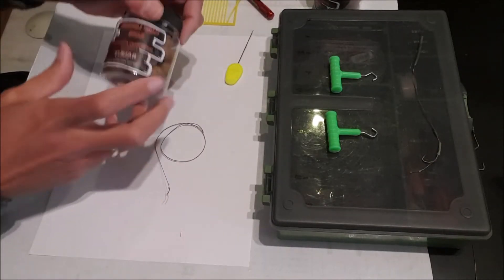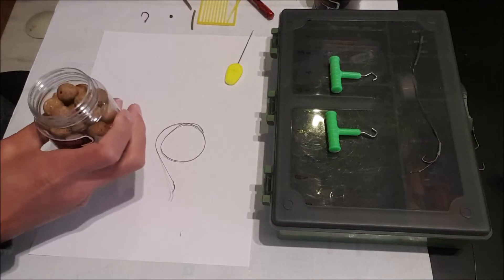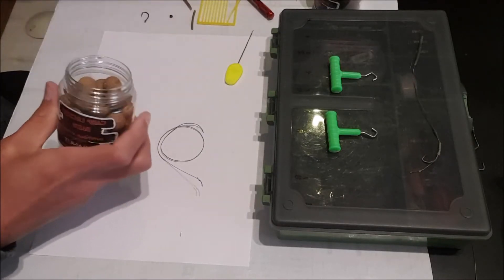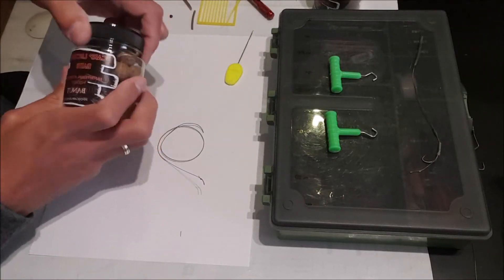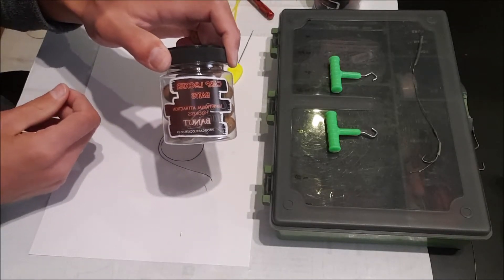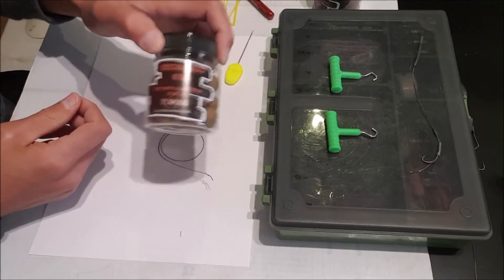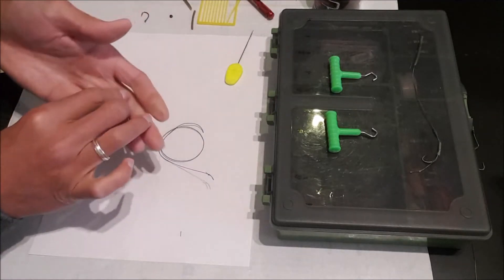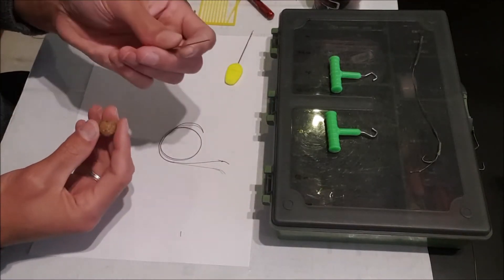With a size 5 hook I'm using a 16mm boilie. I'm using a very consistent catcher. Take your baiting needle.